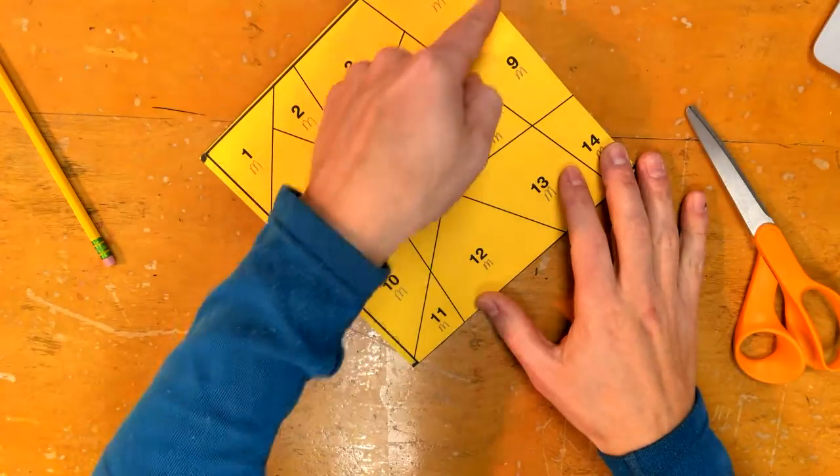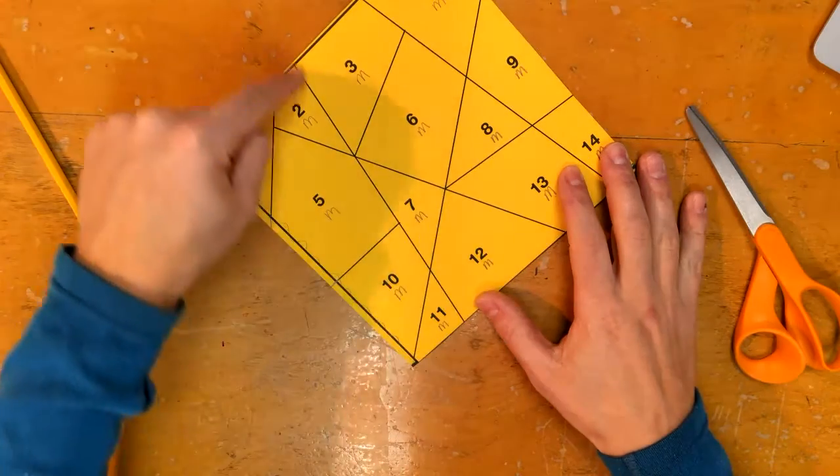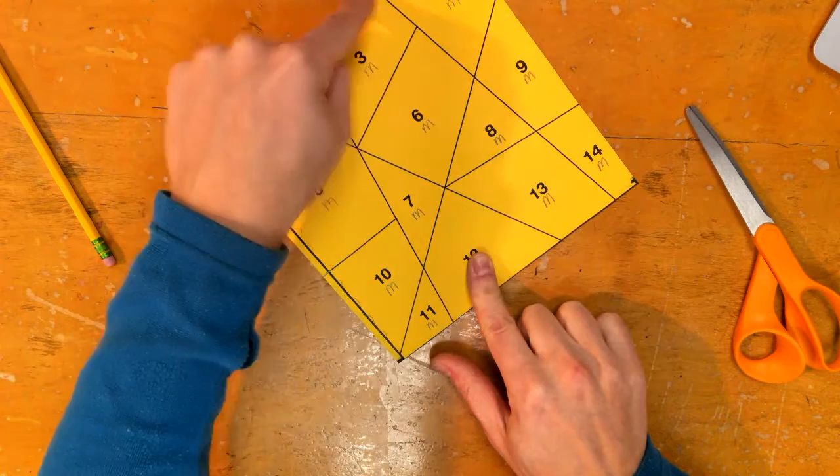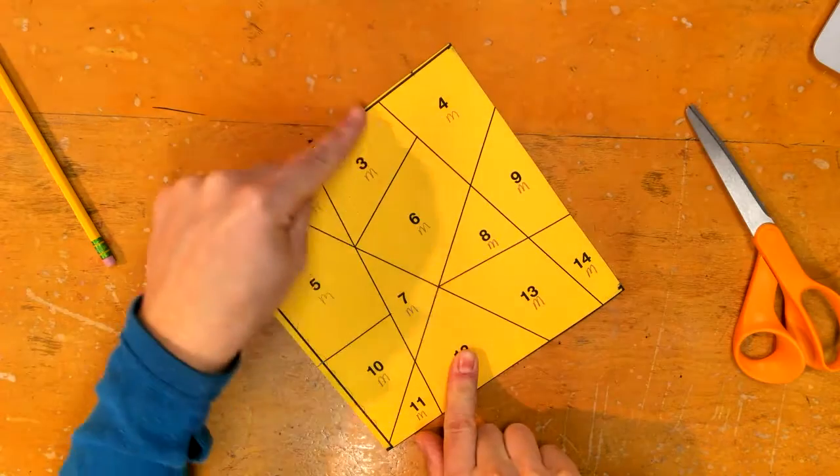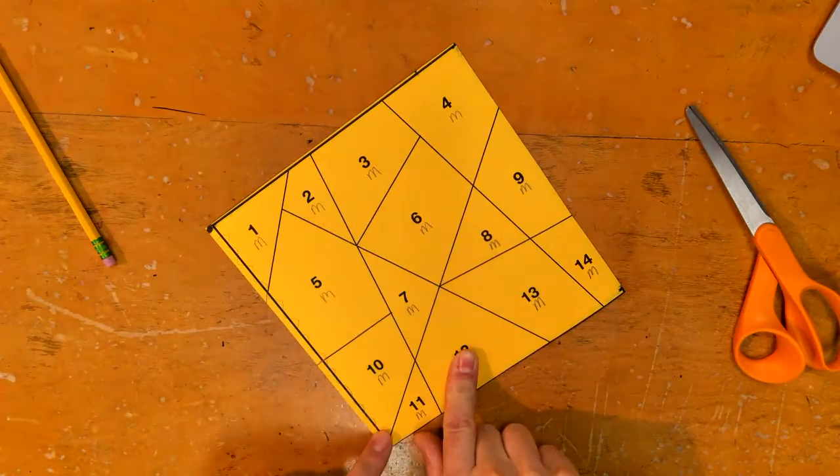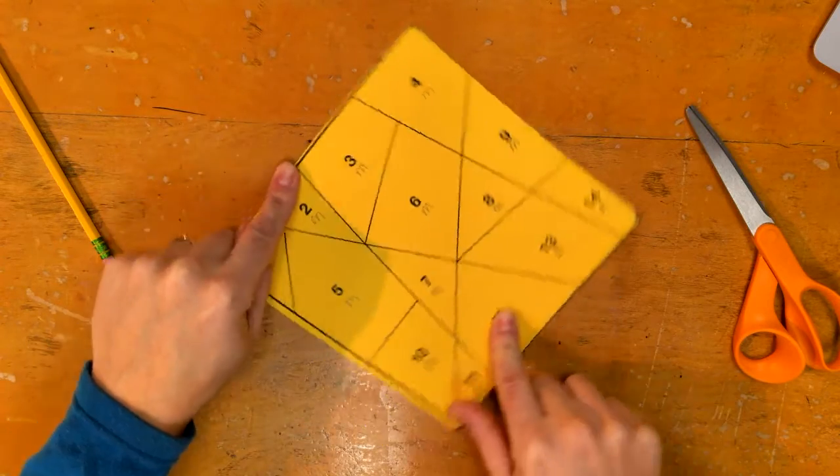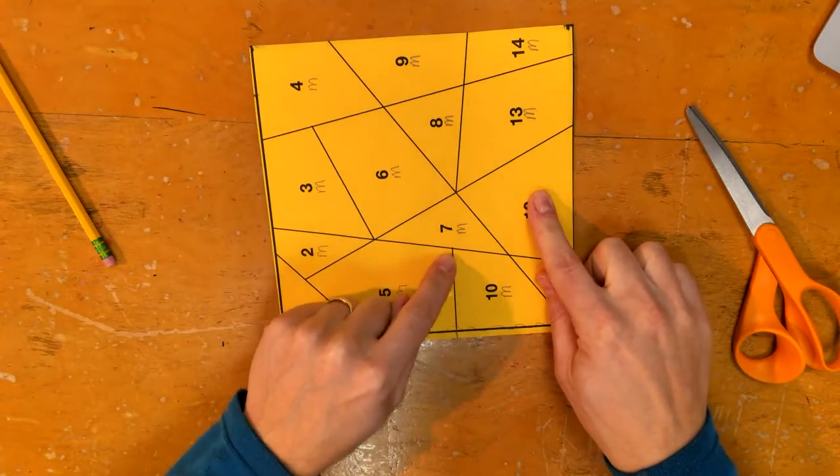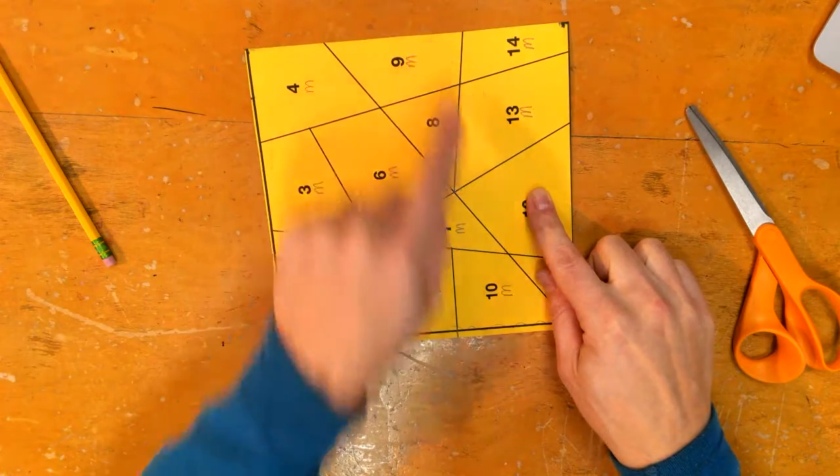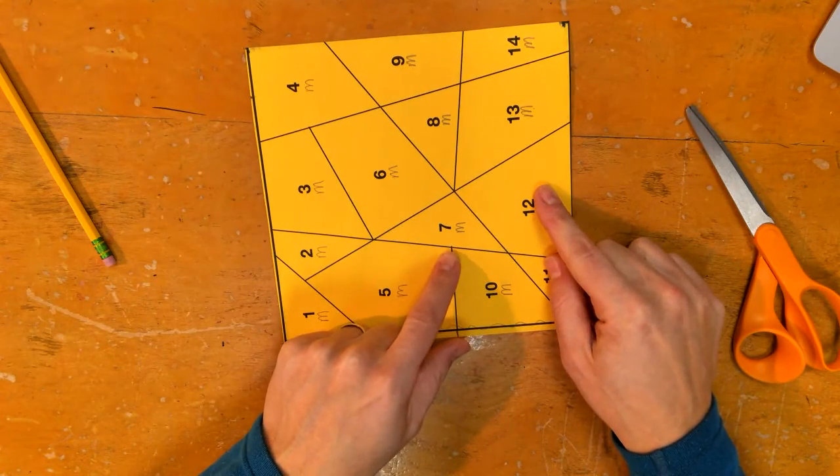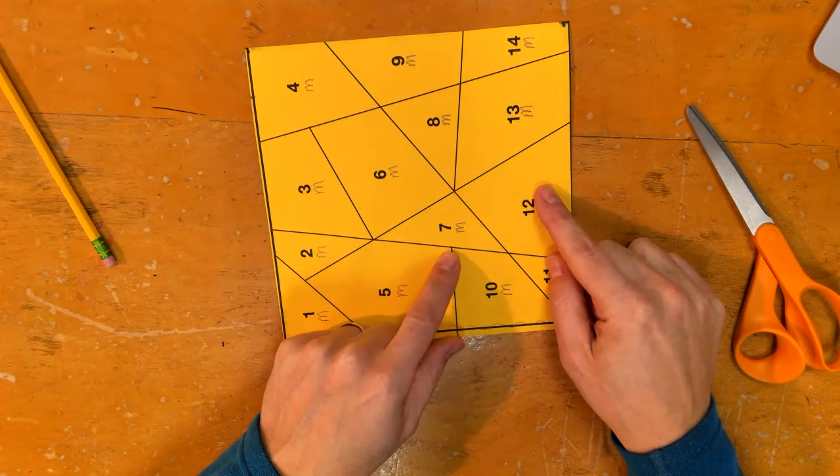The first line that we want to cut has to be one that goes all the way off the paper. So it could be this one, it could be this one, and it could be this one. The reason we wouldn't want to cut this one is because it doesn't go all the way across and we'd have to stop right there and then figure out what to do.